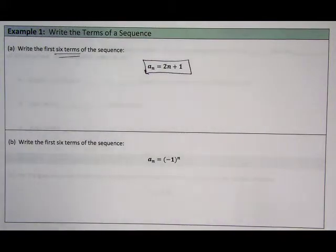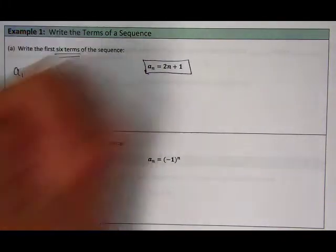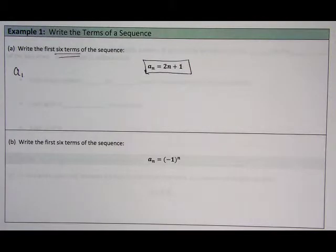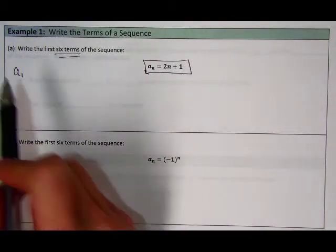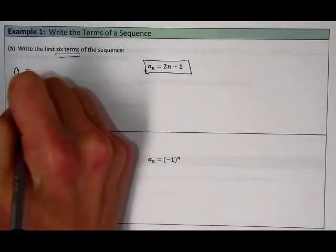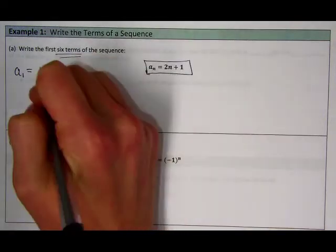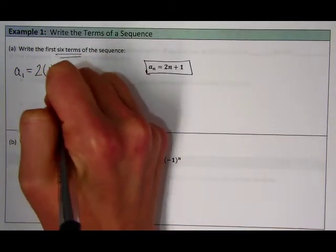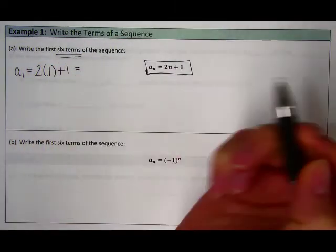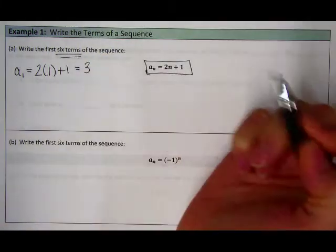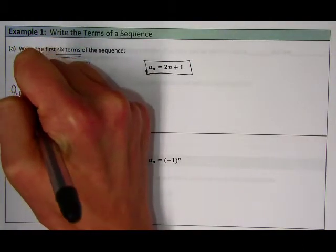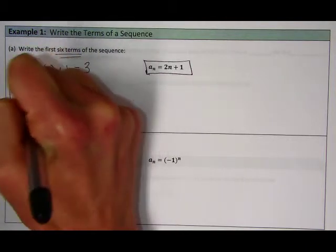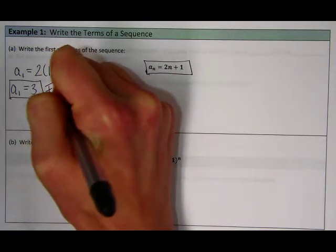Okay, so obviously we know that we're going to be starting with our first term, which we know is going to be a sub 1. So a sub 1 means we're plugging in 1 into our equation over here to get what that first value is going to be. So a sub 1 represents my first term. If I plug 1 into my equation, I get 2 times 1 plus 1, which gives me 3. So a sub 1 equals 3 represents my first term.